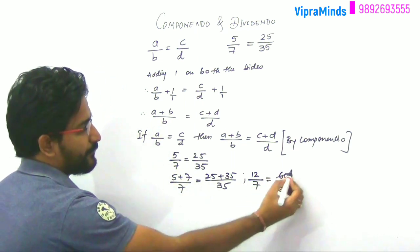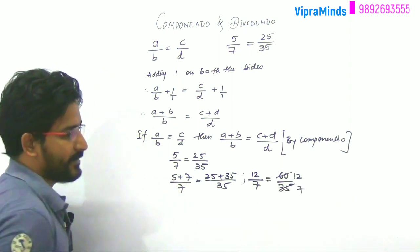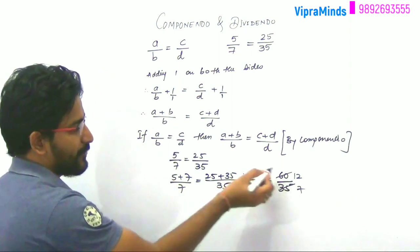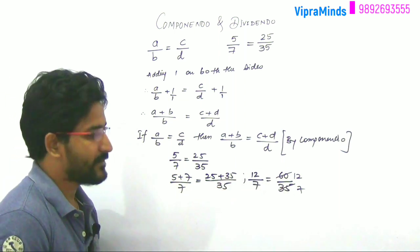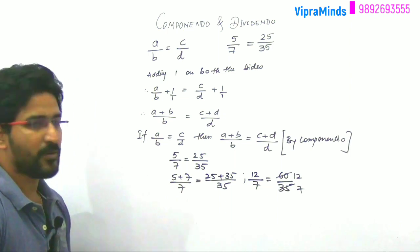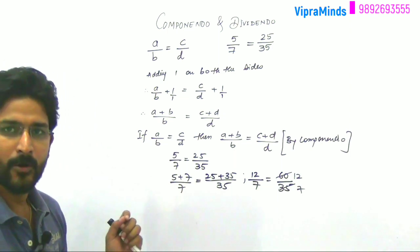Again, if we simplify it, 5 into 12 is 60, 5 into 7 is 35. So again you are getting the same ratio, 12 by 7. Here we will get 12 by 7. The ratio will remain the same on both sides. So this property is known as Componendo property.